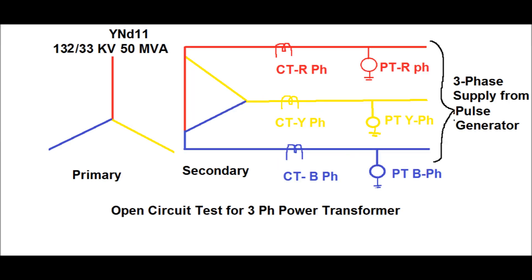The arrangement for the open circuit test of a three-phase power transformer is shown in this diagram. The primary is Y-connected and the secondary or LV side is delta-connected. The primary is voltage class 132 kV and secondary or LV side is 33 kV voltage class. The transformer rating is 50 MVA, and three-phase supply is given from a three-phase pulse generator.